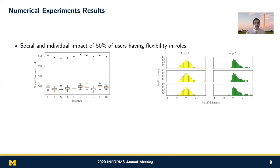As you see in the left figure, letting half of users be flexible in taking both roles of a rider or a driver actually results in a substantial increase in social welfare.